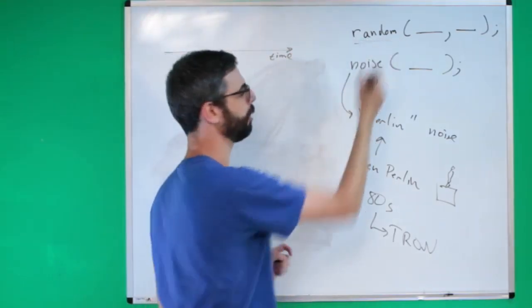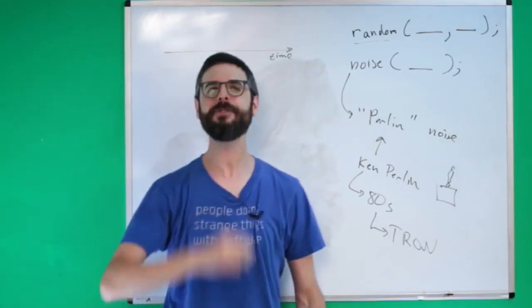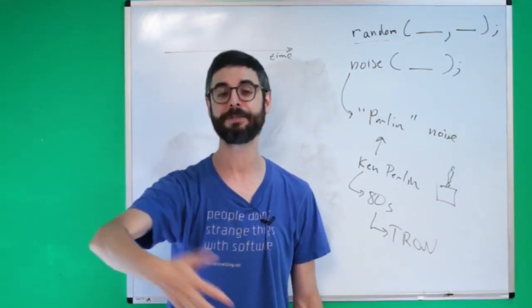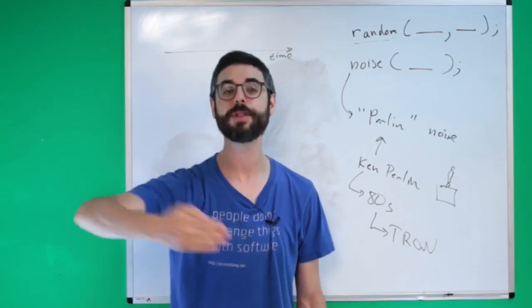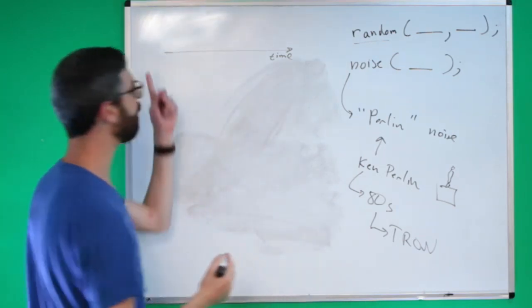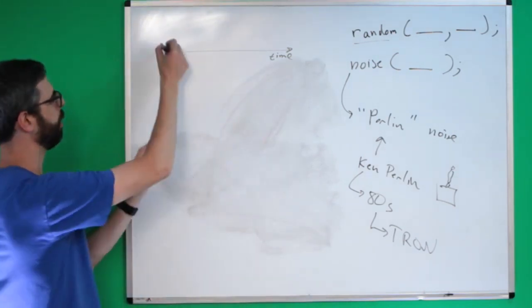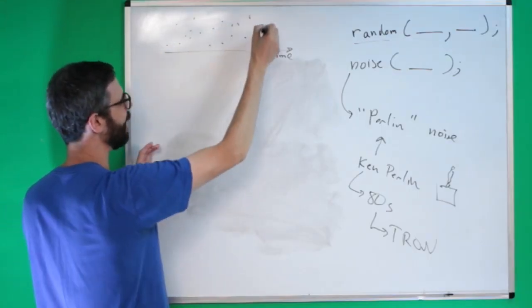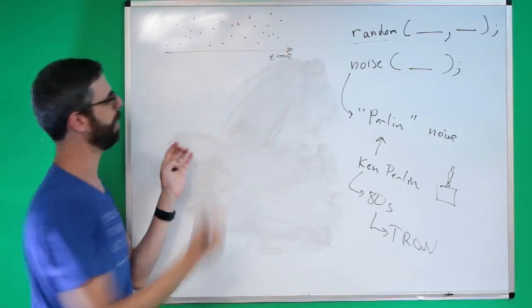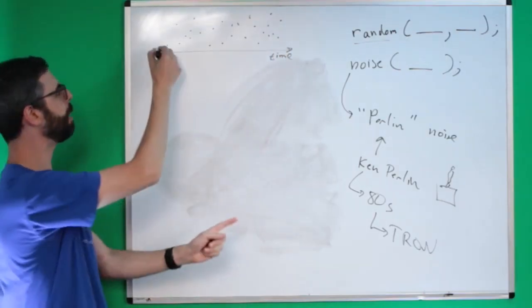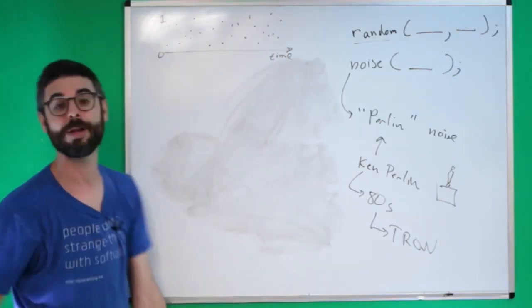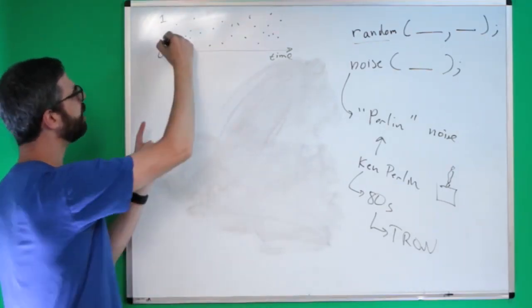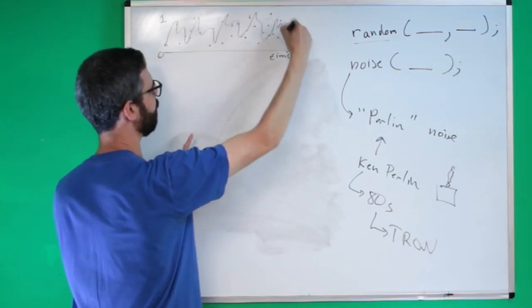Let's think about the random function. Let's say every frame — 60 frames per second, like a p5.js or Processing sketch — I'm calling the random function. I'm going to get a random value over time. I might be getting random numbers between 0 and 1 over time. And if I were to graph it, it would look like some kind of big mess.